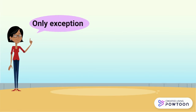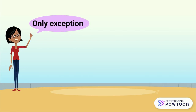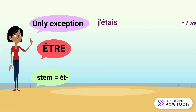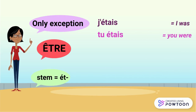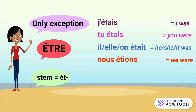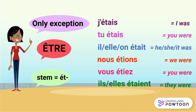The only exception is, unsurprisingly, être. Its stem is ét-. J'étais, tu étais, il/elle/on était, nous étions, vous étiez, ils/elles étaient.